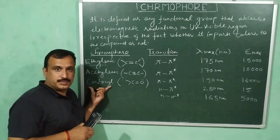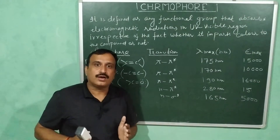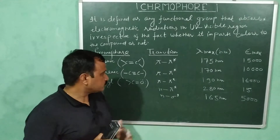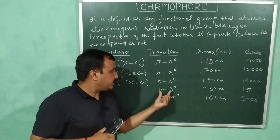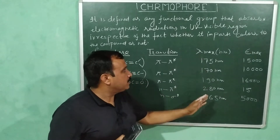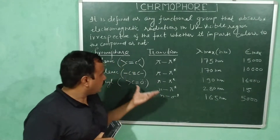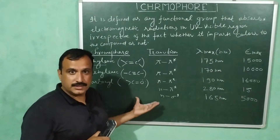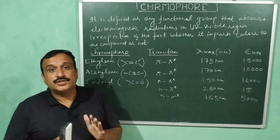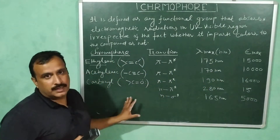The next chromophore is the carbonyl group. In addition to the pi bond, this group also has non-bonding electrons present on the oxygen atom. So this group undergoes three types of electronic transitions: pi to pi star, n to pi star, and n to sigma star. The corresponding lambda maximum and molar extinction coefficient values for these transitions are the literature values, which are available for different chromophores in published references.